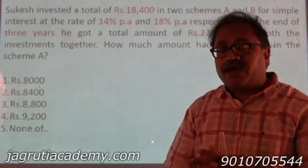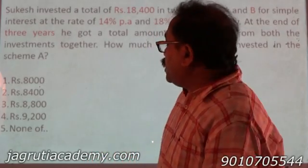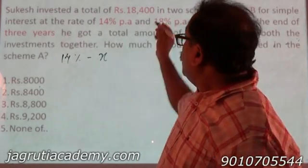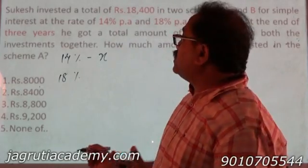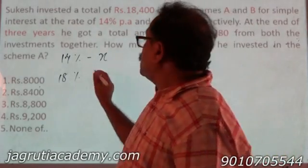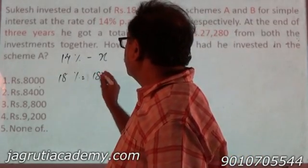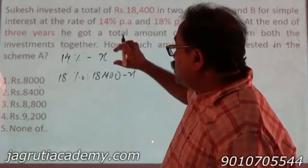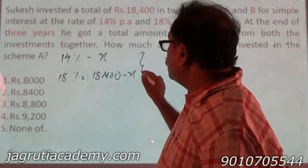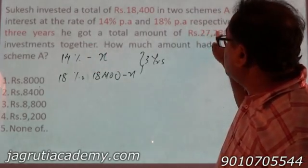Let's do it. There are two ways I can answer this question. One is the conventional way, the way we used to work in 9th standard. Let's assume that the amount invested at 14% per annum is X, then at 18% per annum the money invested is the remaining part — that is 18,400 minus X. In both cases the time period is 3 years and the total amount is 27,280.